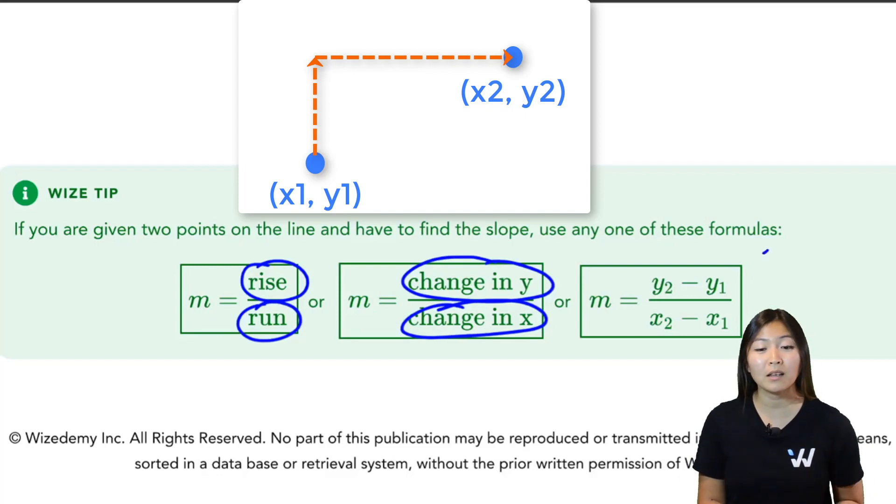So basically what we're doing is we are calculating y2 minus y1 divided by x2 minus x1, which we'll see some examples of later on.